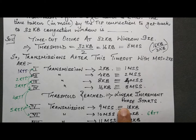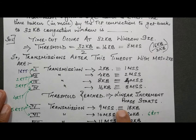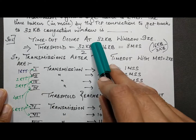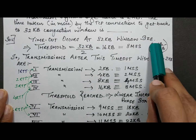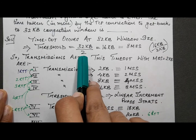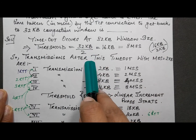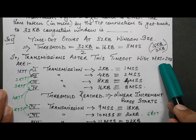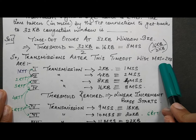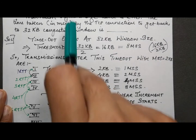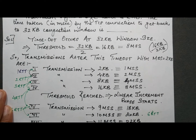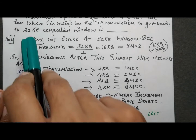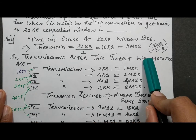First, writing out what's given: timeout occurs at a 32 KB window size. The new threshold is set to 32 KB divided by 2, which is 16 KB, which equals 8 MSS (since MSS is 2 KB). Transmission after the timeout starts at 1 MSS, since no smaller fragment size is given.